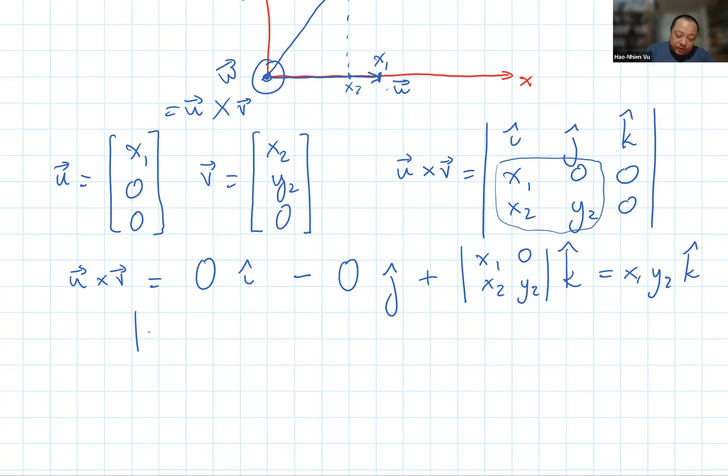So the length of the cross product is the absolute value of x1 times y2, which is the absolute value of x1 times the absolute value of y2.